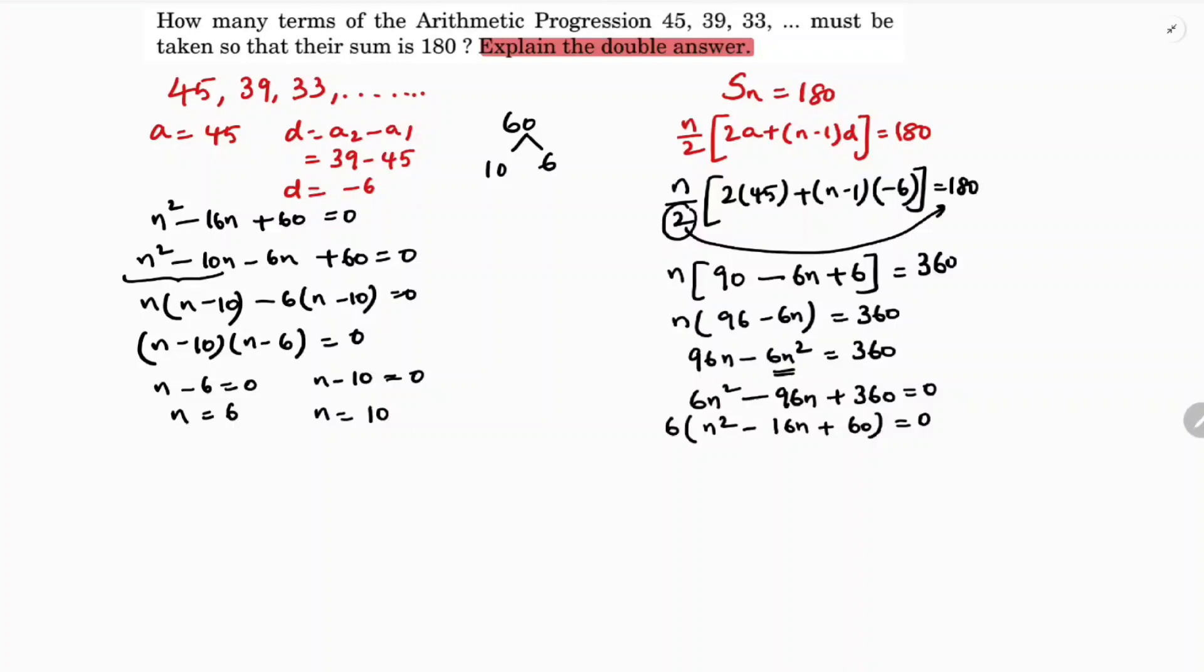Both the answers will be the same. Now see here, S6 is 6 by 2 into 2a, a is 45, plus n, 6 minus 1, into d is minus 6. 6 by 2 is 3, 2 into 45 is 90 plus 5 times minus 6.